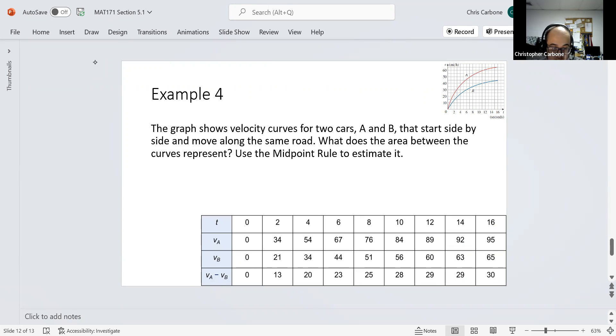Using a conversion of 1 mile per hour being 5,280 divided by 3,600 feet per second, and based upon these points from this graph I have in the upper right-hand corner, we can then make this table of the velocity for the A function, velocity for the B function, and the difference, for values of time between 0 and 16 while going up by 2.